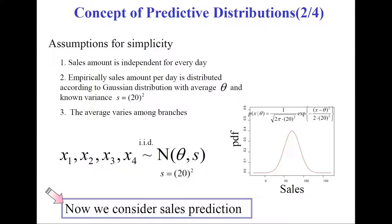In order to solve this problem, we make several assumptions for simplicity. The first one: the sales amount is independent for every day, so we do not care about time series analysis. The second one: empirically, sales amount per day is distributed according to a Gaussian distribution with average theta, which is unknown to us, and known variance, denoted by S here.